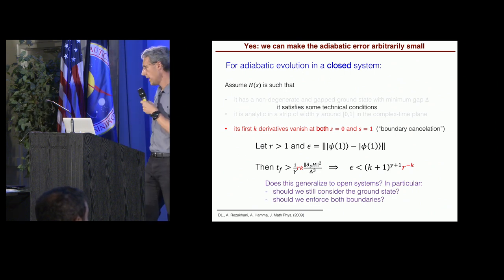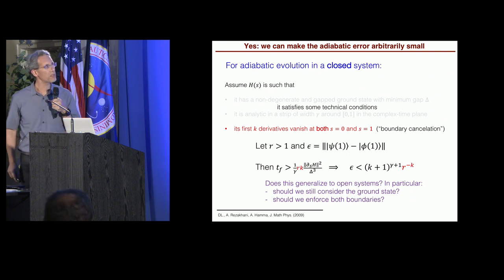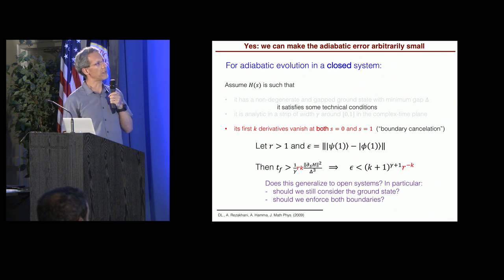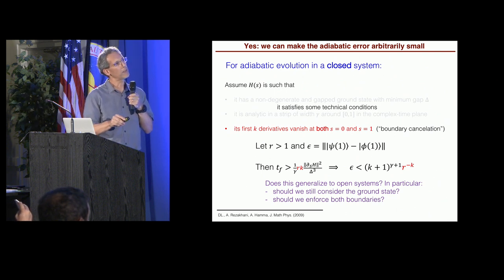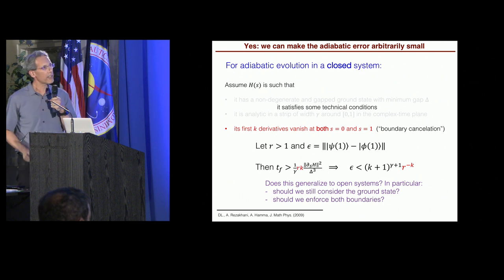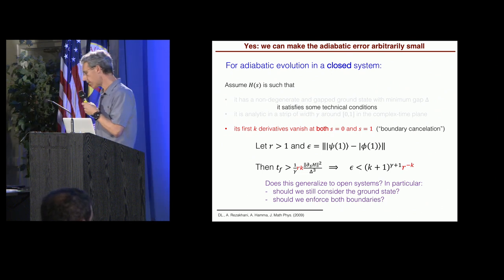All right? There are two important questions we can ask. First of all, should we really still consider the ground state? Secondly, should we enforce this condition at both boundaries? Because in open systems, there's an arrow of time. Okay. So to set this up, let's consider something fairly general. A Liouvillian, such as a Liouvillian, but it doesn't have to be a Liouvillian.